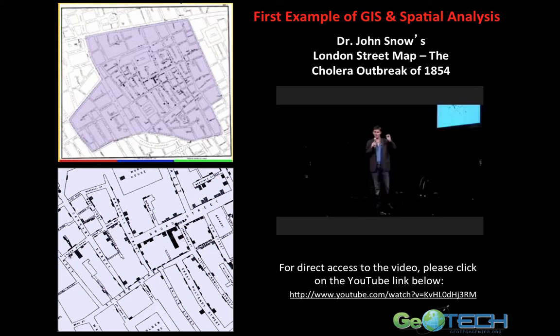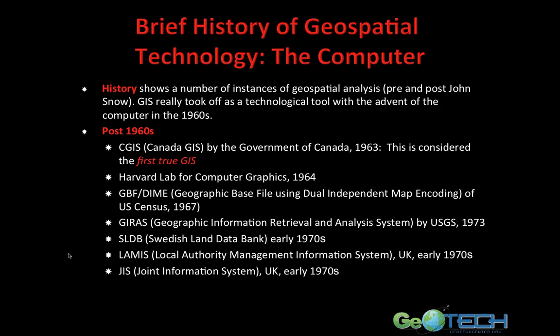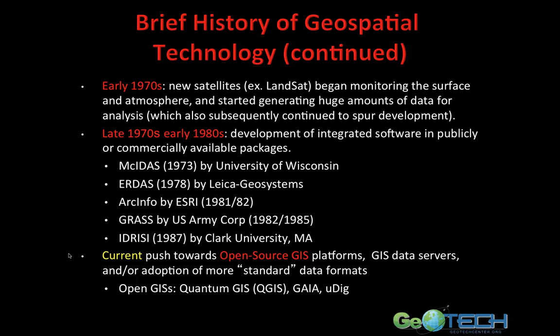Dr. John Snow's London street map of the cholera outbreak of 1854 proved itself a great example of spatial analysis and mapping, and how these techniques can be used to solve problems. Back then there were no fast computers with lots of memory. Today we do, and with the advent of the computer in the 1960s, spatial analysis and geographic information systems really took off. In the early 1970s, new satellites such as Landsat began monitoring the surface and atmosphere, generating huge amounts of data for analysis, which further spurred development of GIS techniques, mapping software, and analytical software.